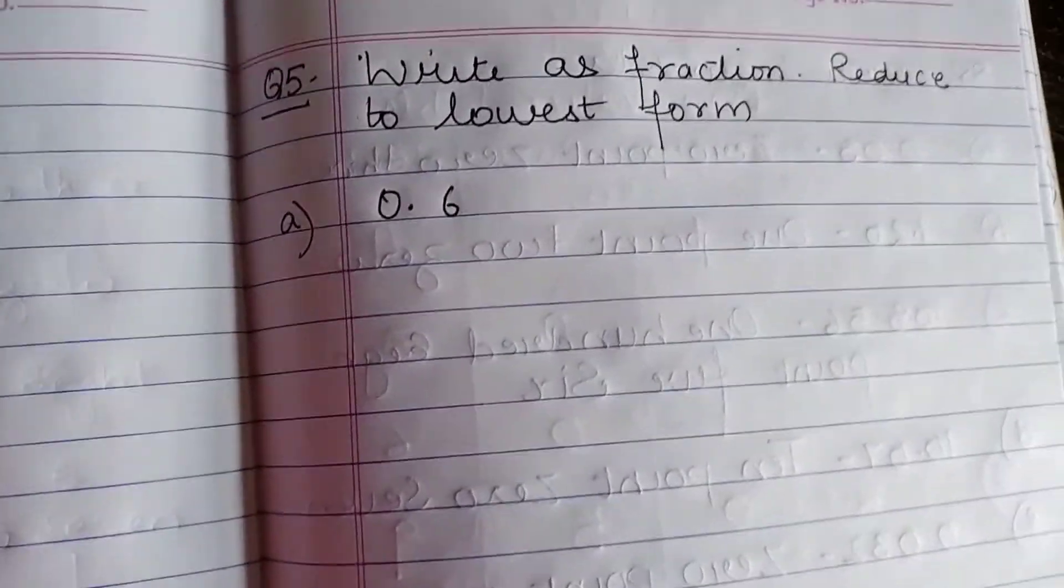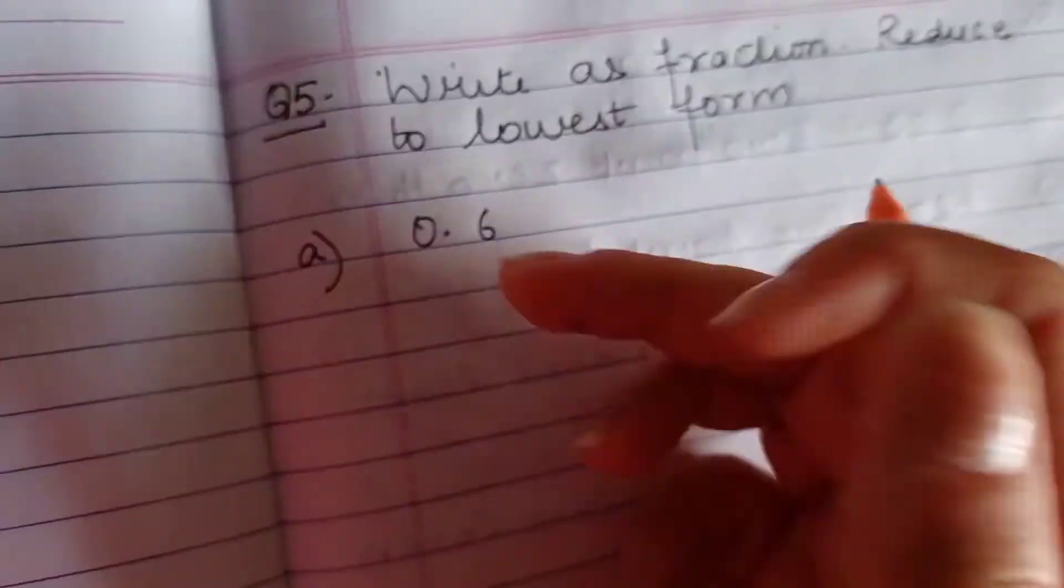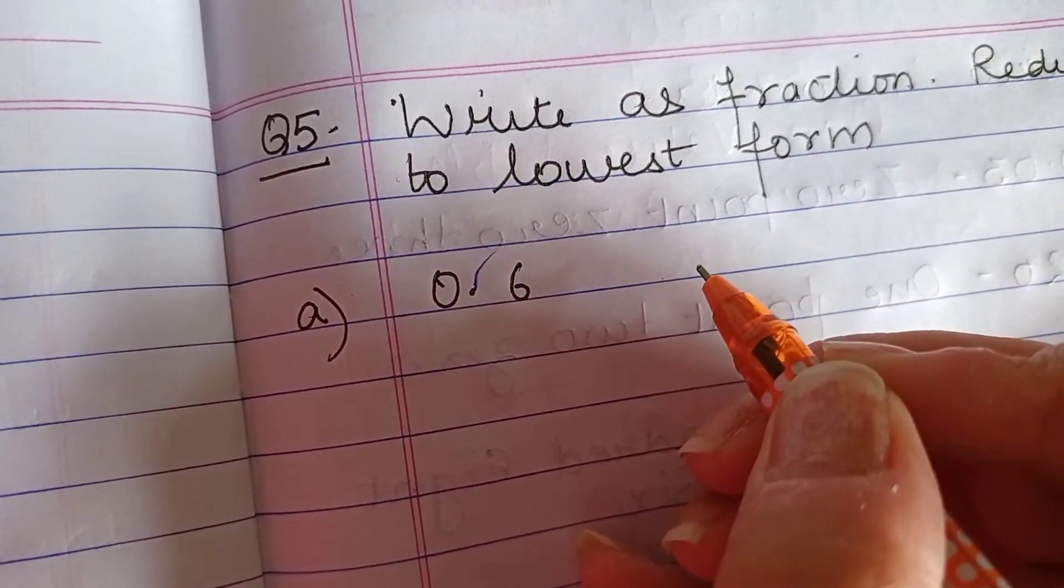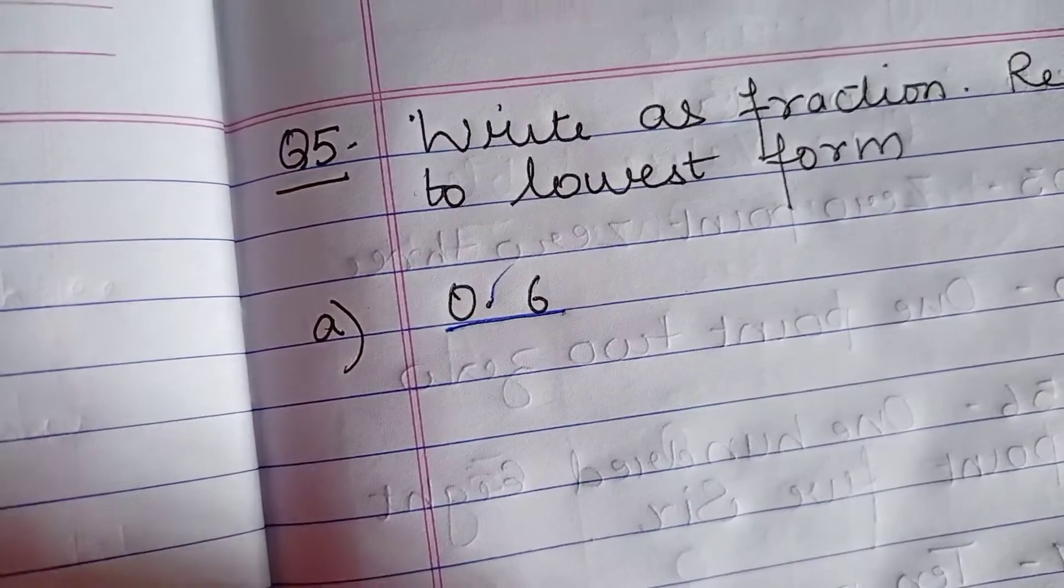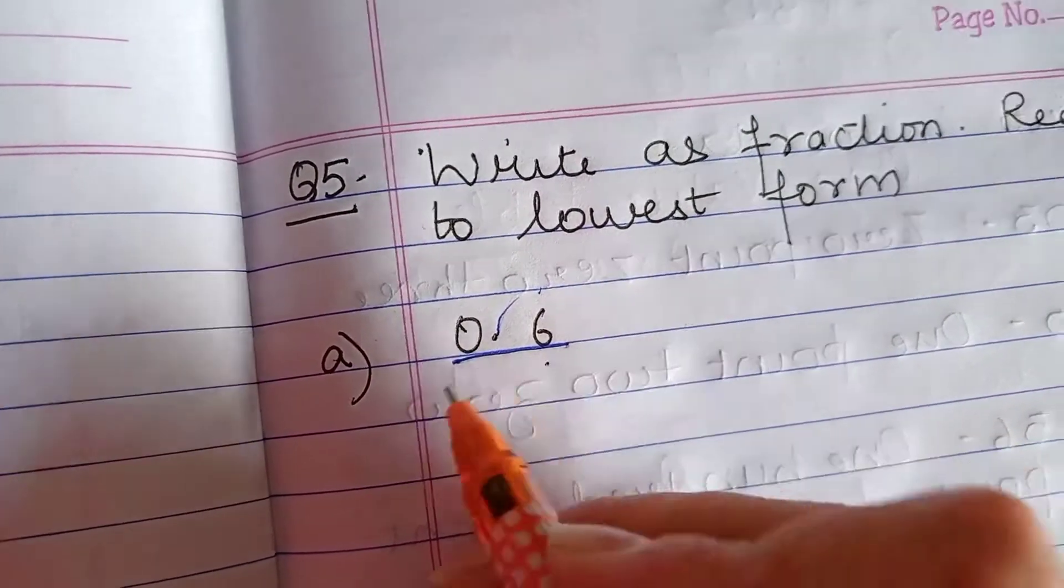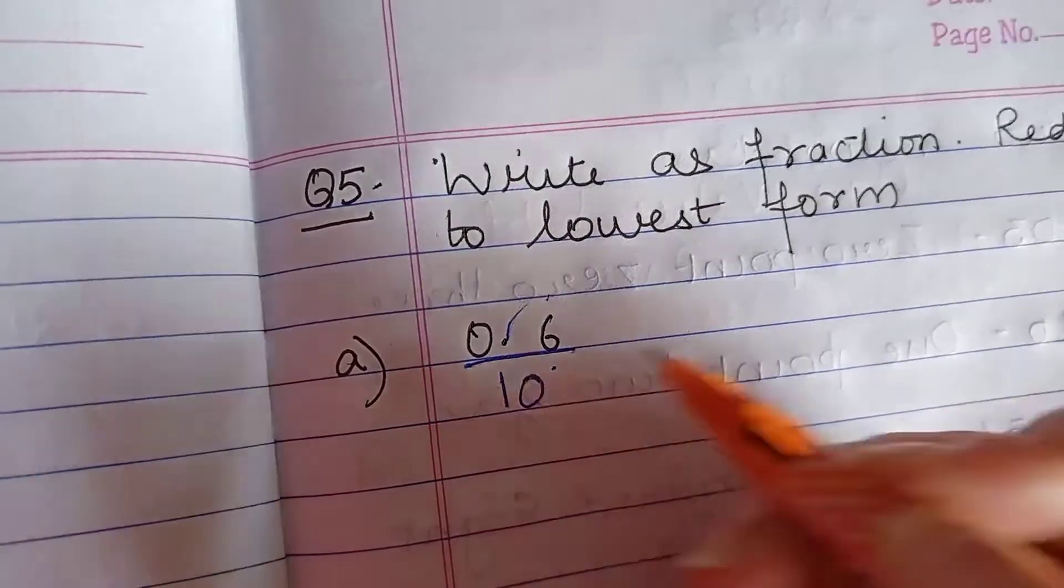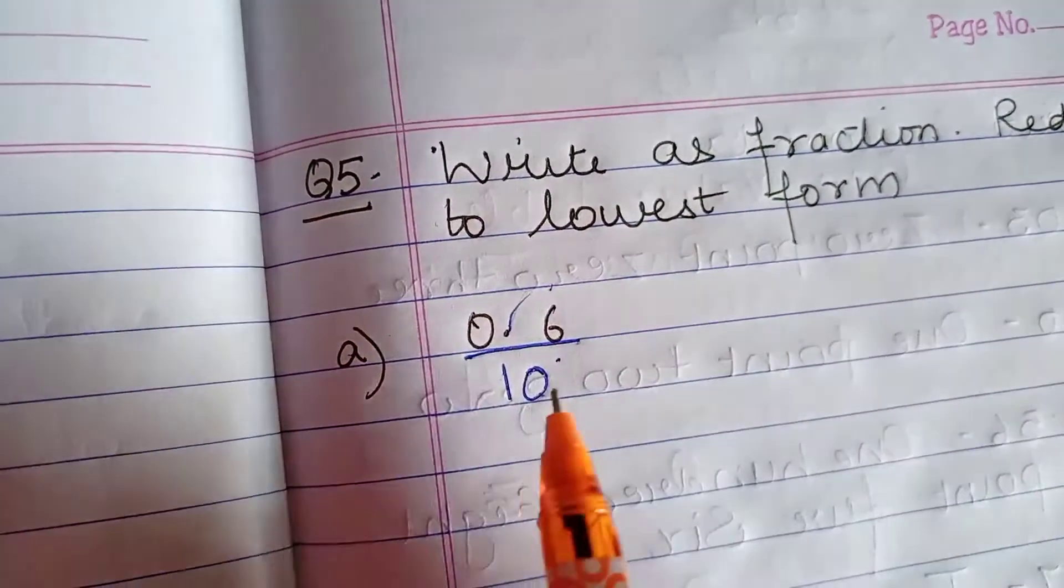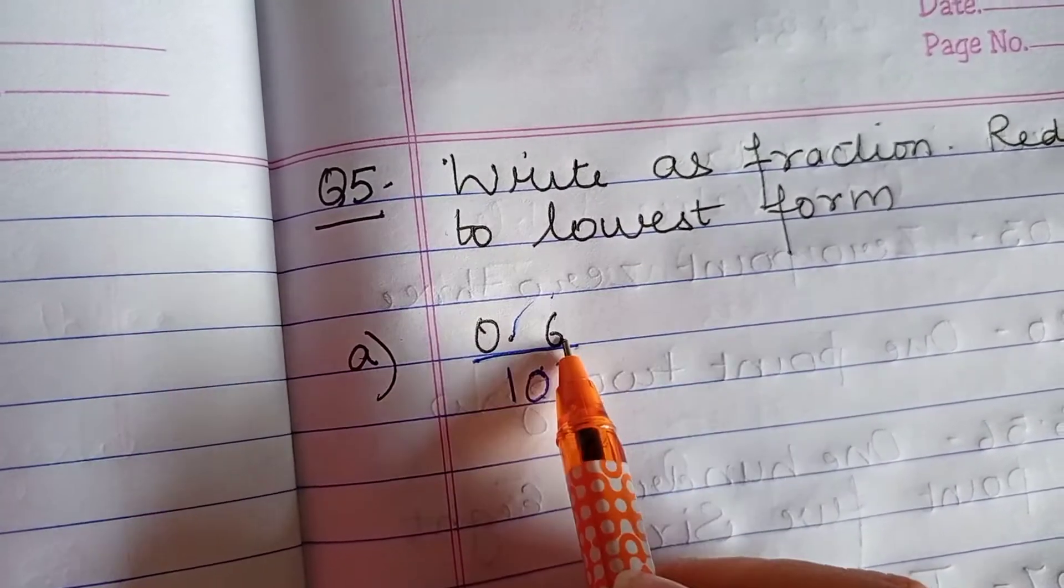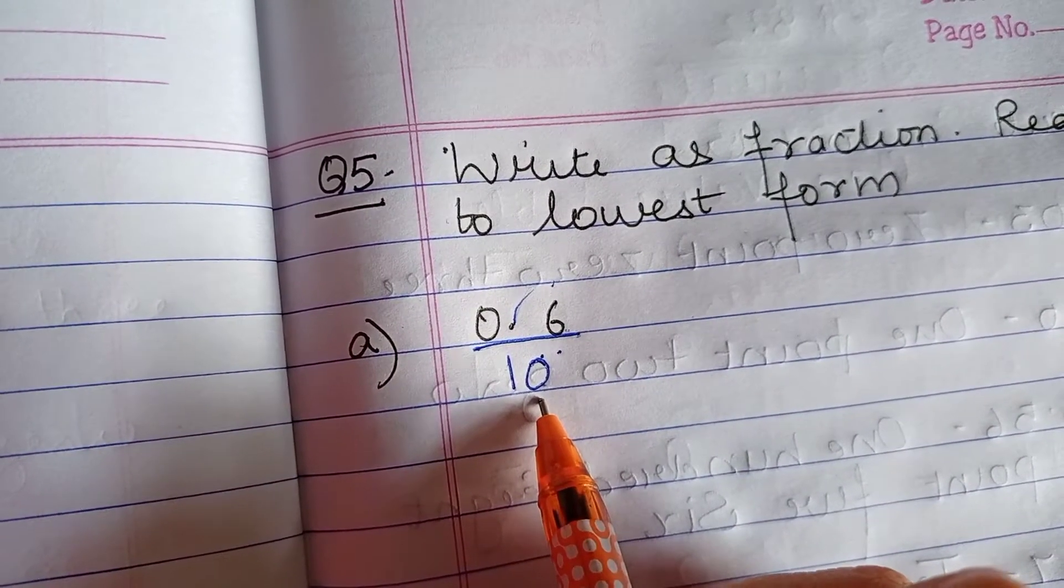So our first part is 0.6. Dear children, what you all are supposed to do? You have to remove this decimal and convert it into fractional form. So when you remove this decimal, how many numbers are there after decimals? That number of zeros you have to write in the denominator. Here in the first part only 6 is there after decimal, that is one number. So I have put 1 0.